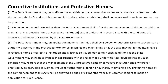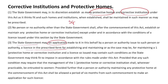Corrective institutions and protective homes: the state government shall establish protective homes or corrective institutions as and when they think fit. No person or authority other than the state government, after the commencement of this Act, shall establish or maintain any protective home or corrective institution except in accordance with the conditions of a license issued by the state government. If a person applies to the state government and obtains a license, they can establish and maintain a protective home or corrective institution, complying with the conditions provided by the state government. Any such condition may require that the management of a protective home or corrective institution shall, whenever practicable, be entrusted to women.